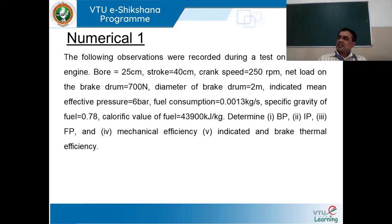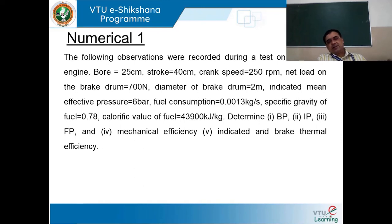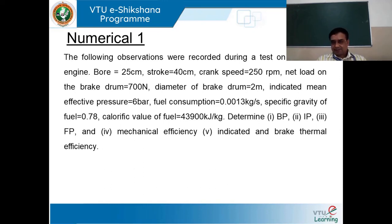Next, we take up brake power — that is usually the rated power or the output power. When an engine is running continuously, by the application of the brakes the vehicle will be stopped. The minimum power or the rated power is usually referred to as brake power. So, indicated power will invariably be higher than brake power — maximum power is indicated power, minimum power is brake power.